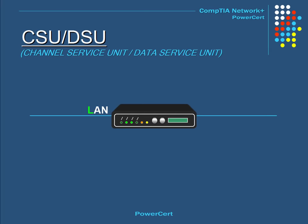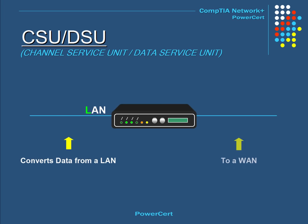This is a CSU-DSU. This is a device about the size of a modem. What it does is convert data from a local area network to a wide area network, because the data formats between a LAN and a WAN are different.